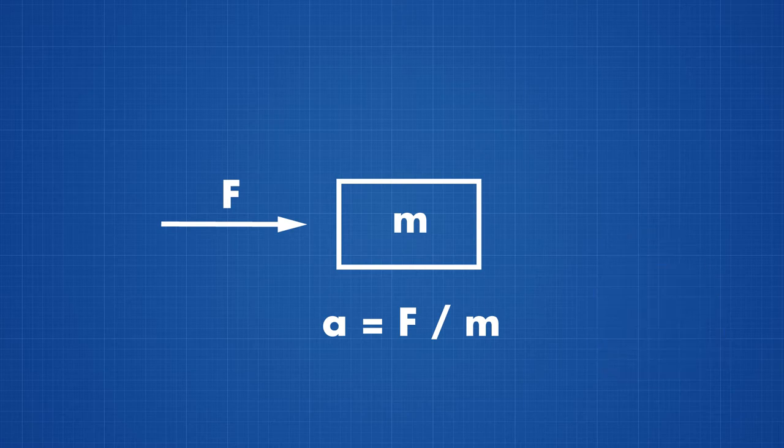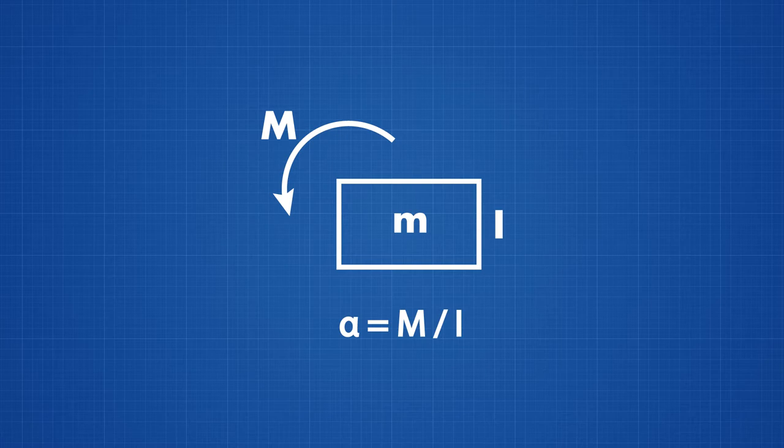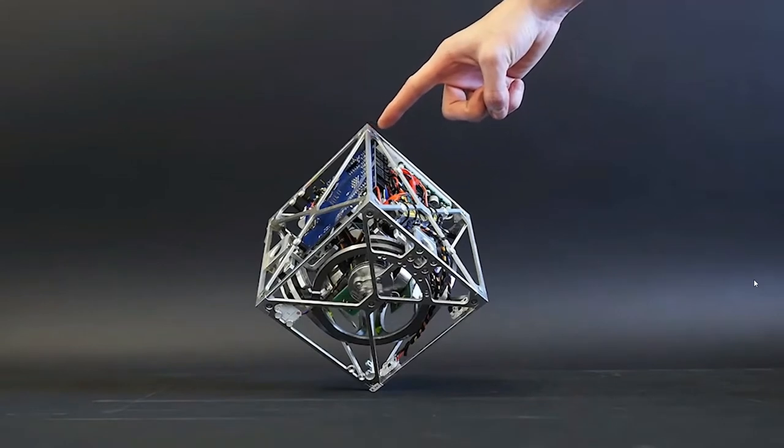In the same way, if we want to rotate our object, we must apply a torque. A torque will generate an angular acceleration that is inversely proportional to the object's moment of inertia. The moment of inertia is the equivalent in rotation to a mass in linear motion.